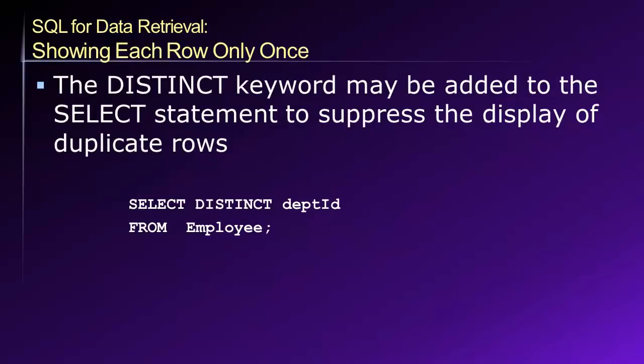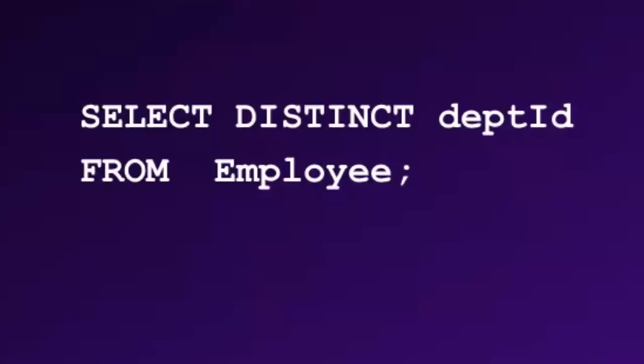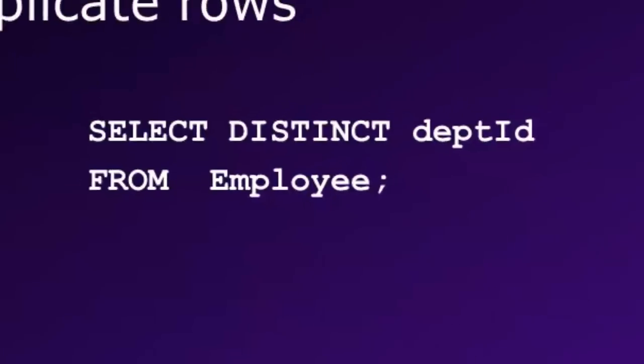If the result of our query contains many duplicate rows, we can eliminate that problem by using the SQL DISTINCT keyword. Placing DISTINCT in front of a column name causes the database to remove any duplicate values when generating results. For example: SELECT DISTINCT department_id FROM employee gives us a list of all unique department IDs from the employee table, without any duplicates.